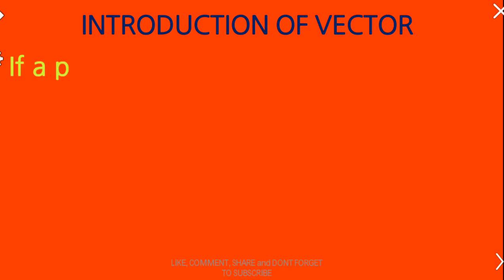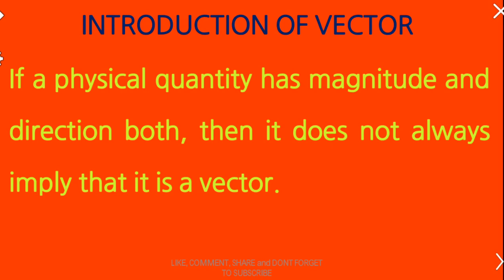Now, let us try to understand an important point. If a physical quantity has magnitude and direction both, then it does not always imply that it is a vector. Magnitude is nothing but a number — if you say the velocity is 10 meters per second, then 10 is the magnitude and meter per second is its unit. If any physical quantity has magnitude and direction, it does not always imply that it is a vector.